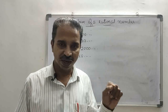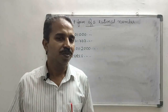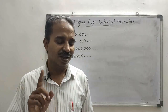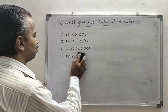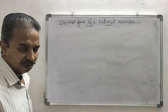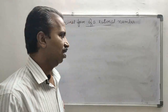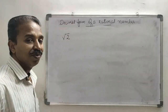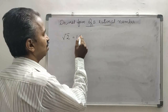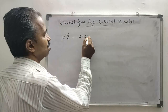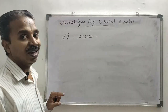Terminating decimals are rational; non-terminating recurring or repeating decimals are rational; but non-terminating non-recurring decimals are irrational numbers. When you find the square root of a number, we come across this type. Square root of 1 is 1, which is rational. When you find the square root of 2 using the division method, you get 1.4142135..., which is non-terminating and non-recurring.